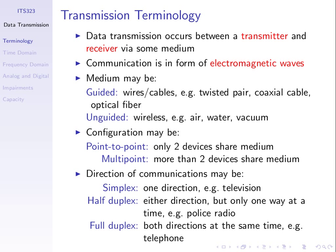So we can distinguish between guided and unguided media — they have many different properties and we'll look at them in the next topic. The link between transmitter and receiver, whether guided or unguided, can have a configuration that is either point-to-point, point-to-multipoint, or simply multipoint. Point-to-point means there are just two devices — transmitter sends to one receiver. Multipoint is when there are more than two devices sharing that link or medium, so one transmitter transmits and many receivers receive at the same time.